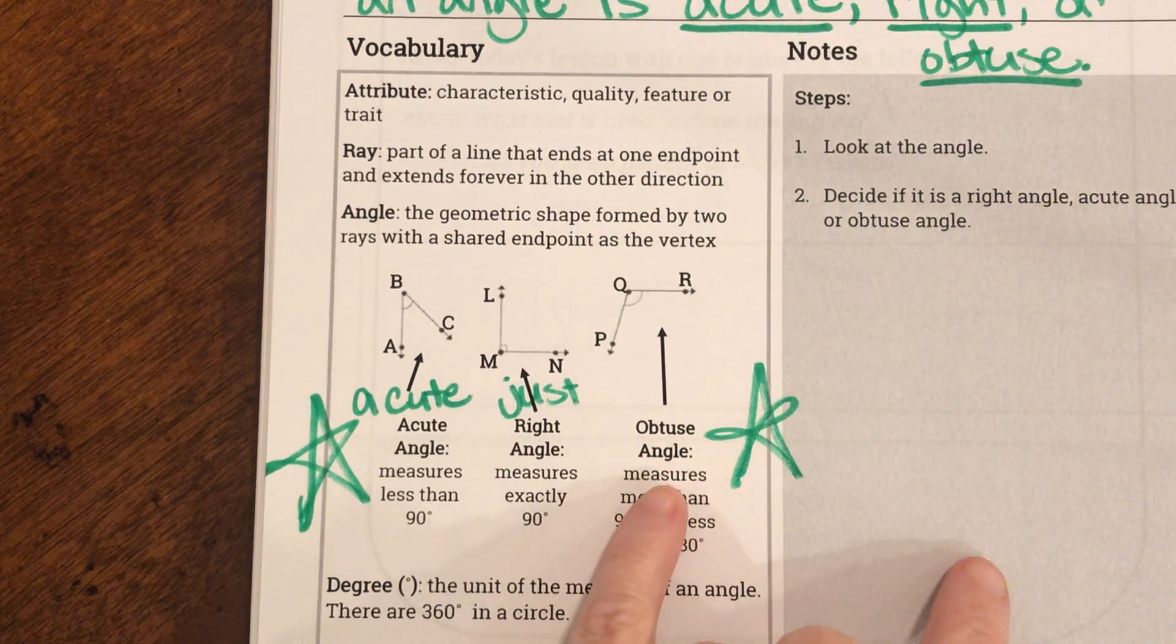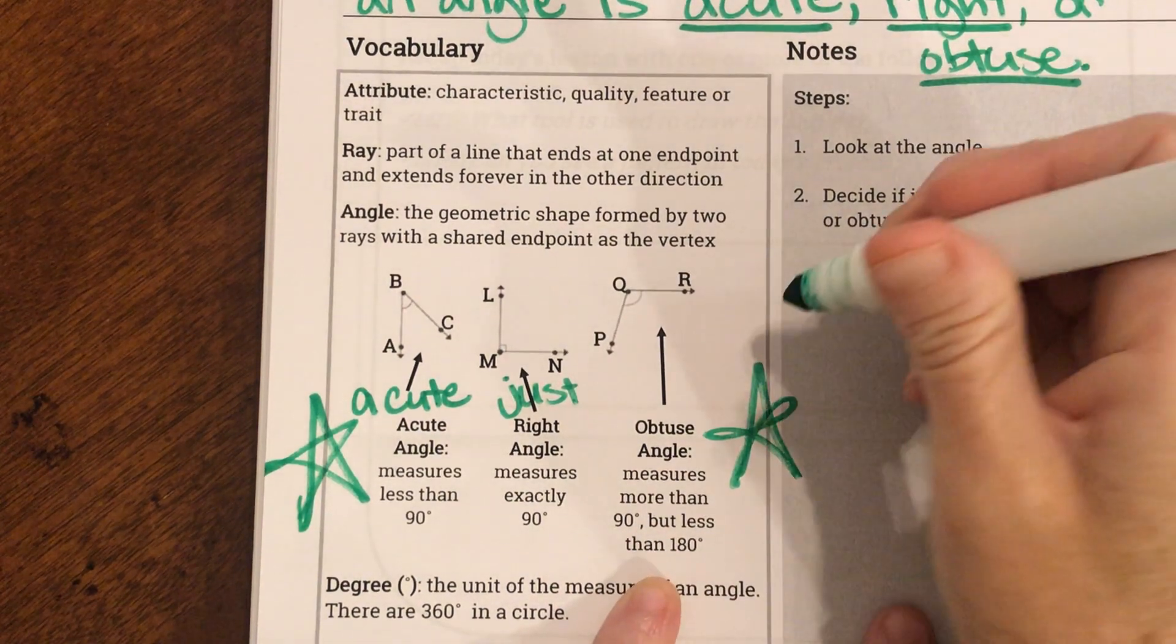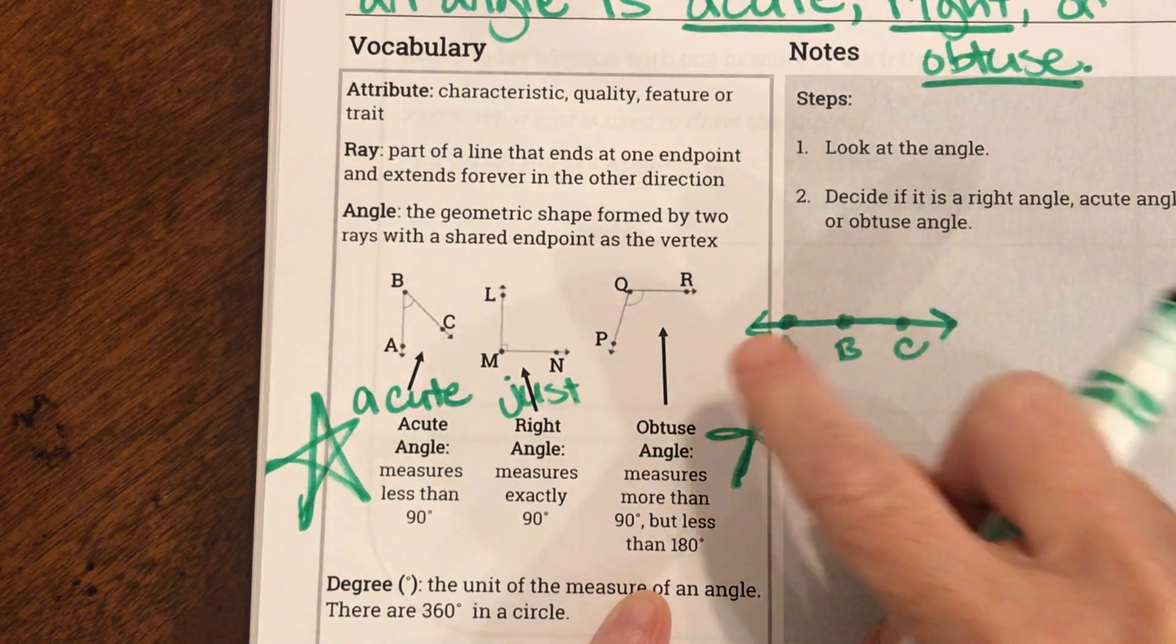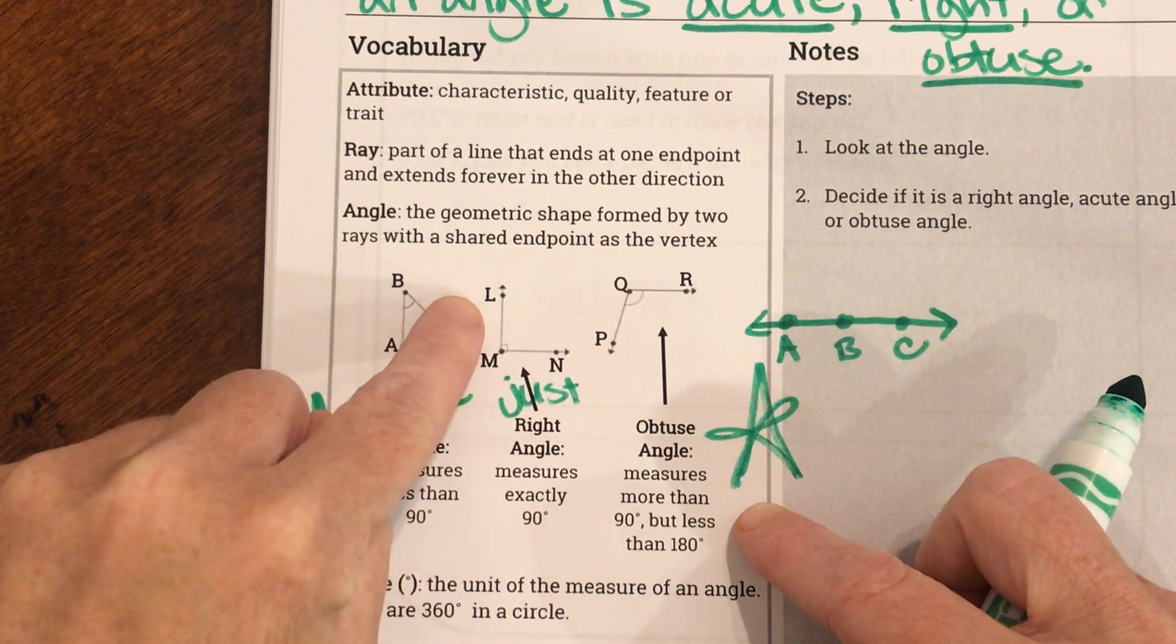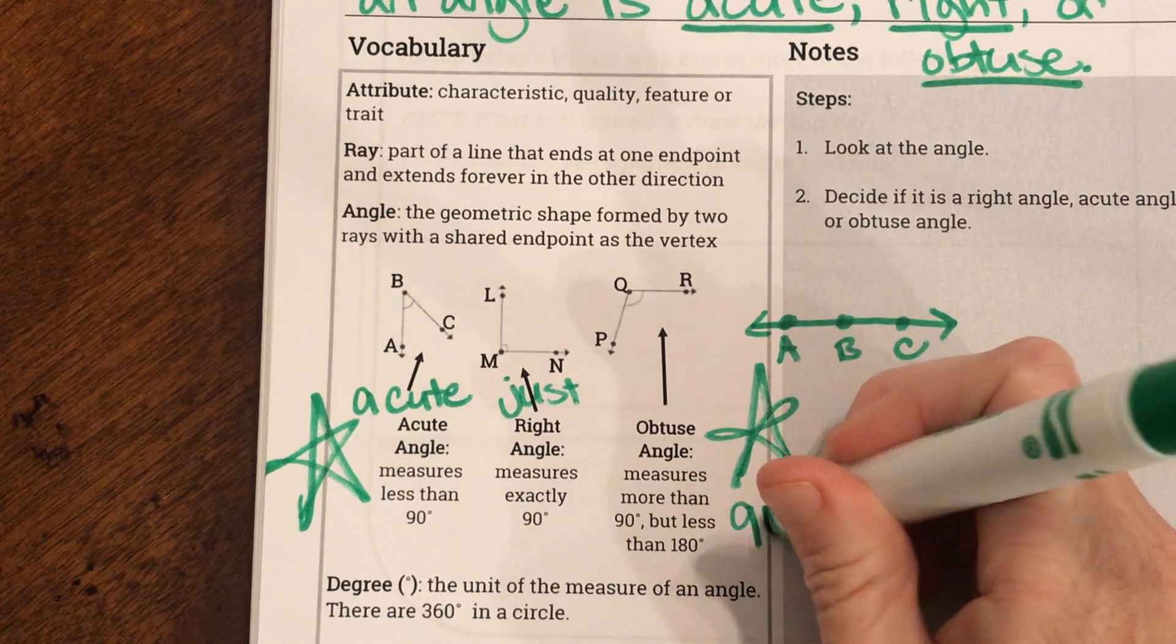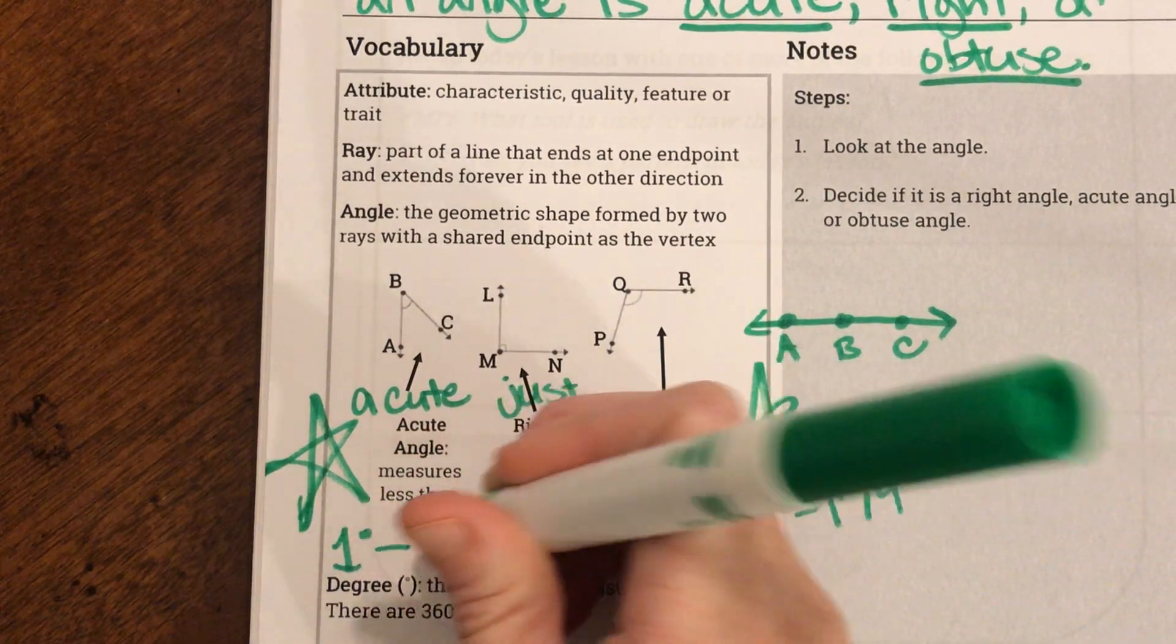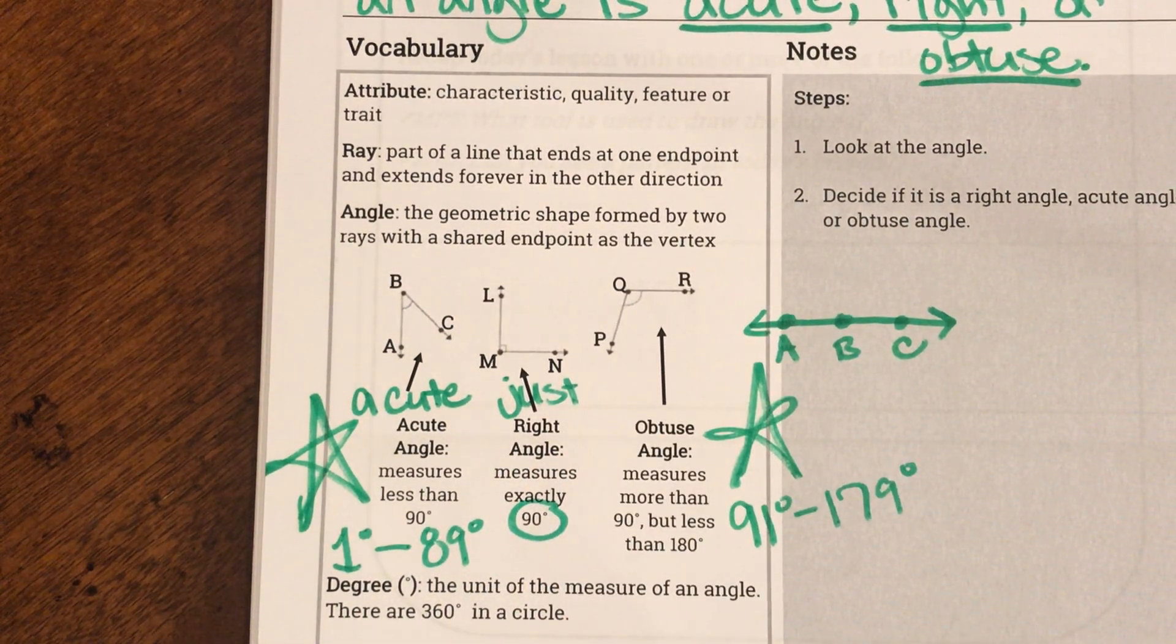Our other angle is called obtuse. Obtuse angles measure more than 90 but less than 180. So, remember our straight line. Our straight line, and we'll add our points there. That is a 180 degree angle. An obtuse has to be larger than our just right 90 degree angle. But it has to be less than 180. So, an obtuse angle would be 91 degrees all the way to 179 degrees. And our acute angle would be 1 degree all the way to 89 degrees. And then our just right is going to be just exactly 90 degrees.